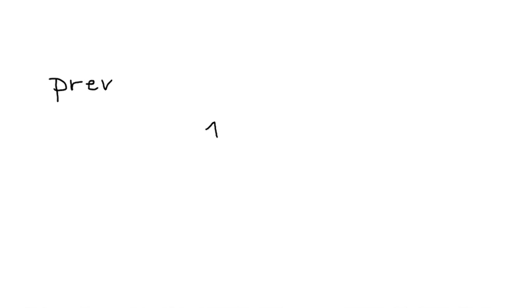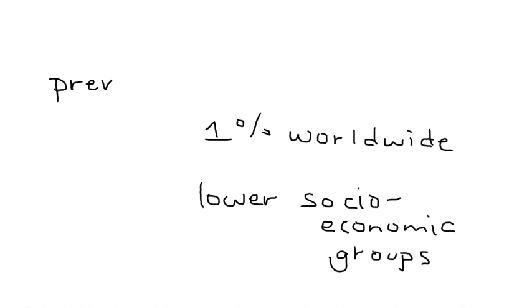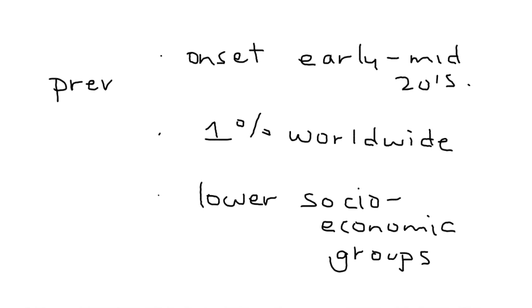This is a very worrisome problem and the prevalence is pretty high — about 1% worldwide. It tends to be higher in lower socioeconomic groups, which is an important part of the prevalence. Most commonly, it tends to present in a person's early to mid 20s, sometimes around age 28.